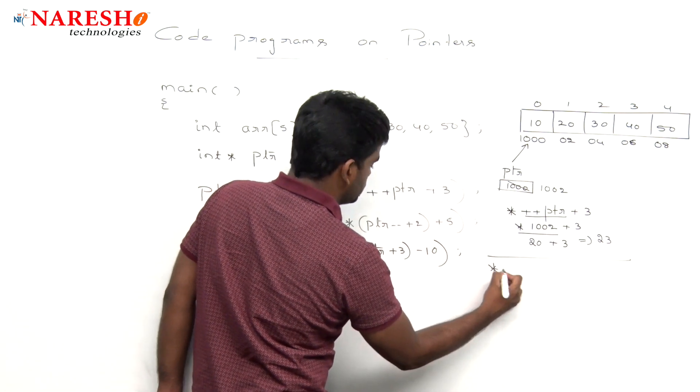Here it is, the value is 1002, pointer plus 3. After modify operators, next priority to pointer operator. So instead of executing this, this pointer to 1002 executes first and then it will execute. So pointer to 1002 is what? 20 plus 3. So 20 plus 3, the value is 23. First expression value is 23. It will get 23.